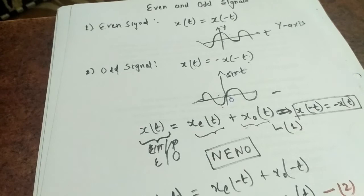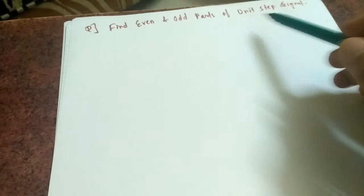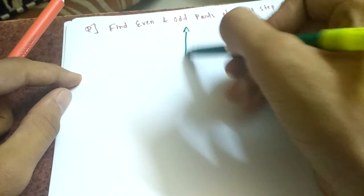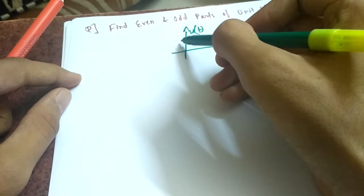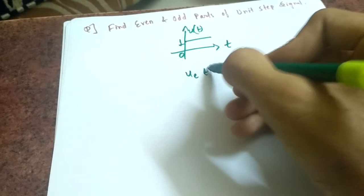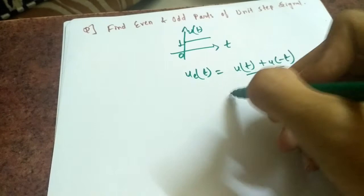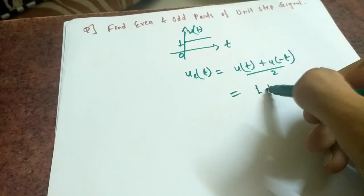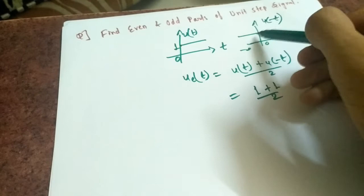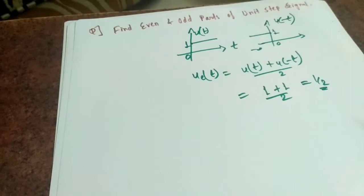Let's solve an example: find the even and odd parts of the unit step signal. Note that the unit step is a 'nano' signal, so we can find its even and odd parts. The unit step u(t) is 1 for t ≥ 0 and 0 for t < 0. Its even part is [u(t) + u(-t)] / 2. Since u(t) = 1 and u(-t) = 1 in their respective regions, the even part equals one-half.